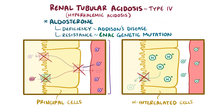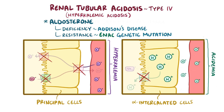Overall this causes high potassium, or hyperkalemia, and high levels of hydrogen ions, or acidemia. Also, since hydrogen usually combines with ammonia in the tubule to form ammonium, with less hydrogen there will be less ammonium formed and excreted in the urine.